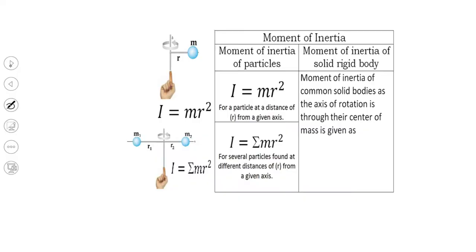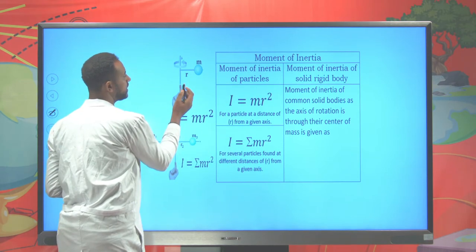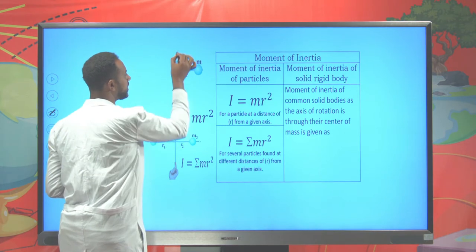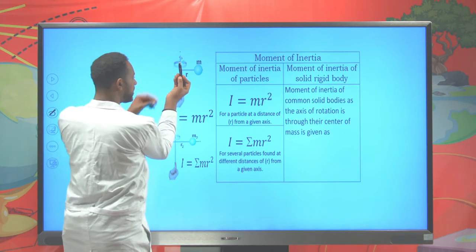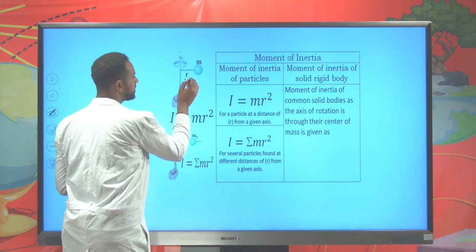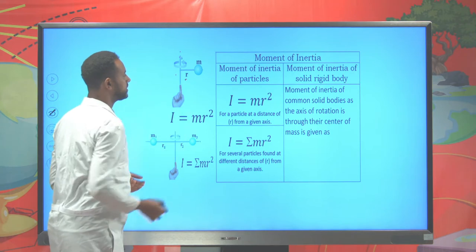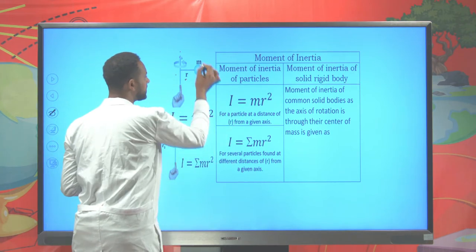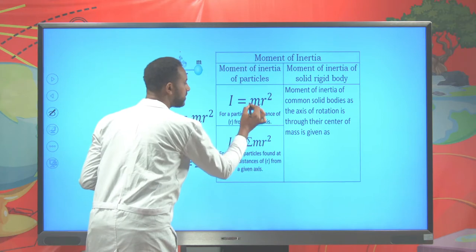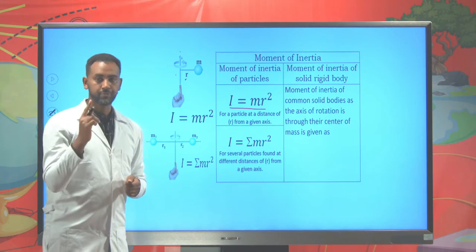Here we have a particle system. The moment of inertia of a particle system: suppose you have a single particle found at a distance r from the axis of rotation. You have a mass m attached at some distance r from the axis of rotation. Note that r doesn't always mean radius — in this case it is a distance. So to find the moment of inertia of a single particle, you have the mass of the particle times r squared. This is how we determine the moment of inertia of a single particle.